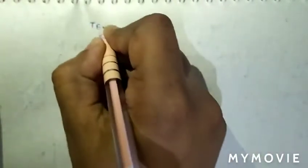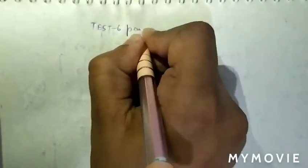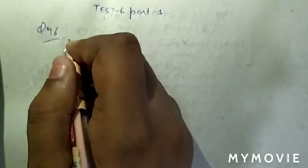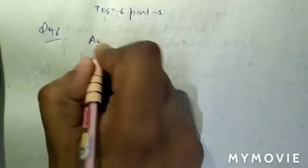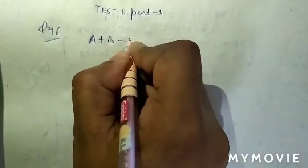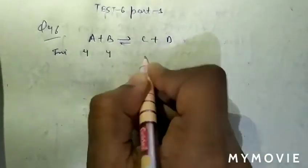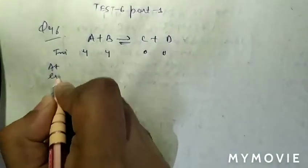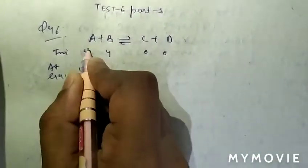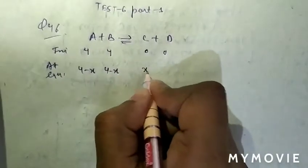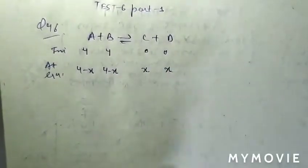Test number six, part one. Question number 46: initially four moles of A and four moles of B are given. A + B changes into C + D. Initial moles are four and four, so C and D are zero. At equilibrium: four minus x moles of A, four minus x moles of B, x moles of C, and x moles of D will form.